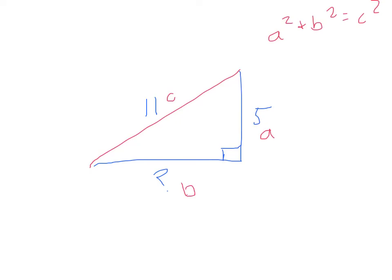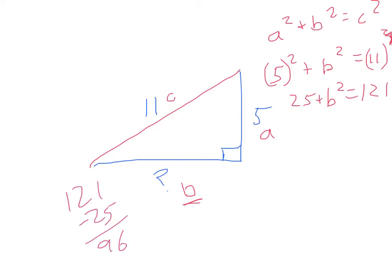We just plug it in. If we say that a is 5, then we get 5 squared plus b - we don't know what b is, so we're just going to still call it b squared - and then we're going to put this equal to 11 squared. 11 squared we know is 121 equals b squared - we can't do anything with that yet - and 5 squared is 25.